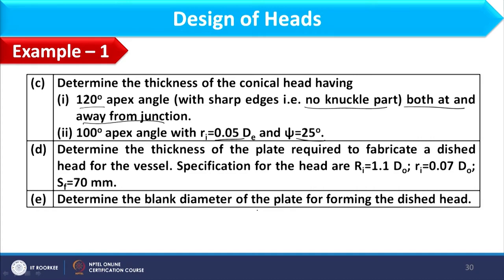In part D we need to determine the thickness of plate required to fabricate a dished head for the vessel. Specifications are: Ri = 1.1·D0, ri = 0.07·D0, and SF = 70 mm. Finally, we also need to determine the blank diameter of the plate for forming the dished heads.